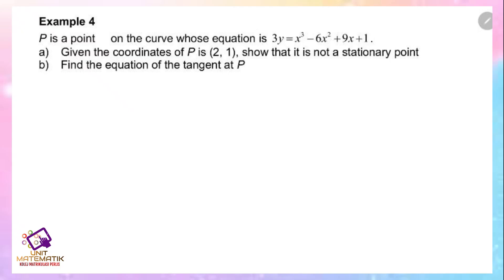Example 4. P is a point on the curve whose equation is 3y equals x cubed minus 6x squared plus 9x plus 1. For part (a), given the coordinate of P is (2, 1), show that it is not a stationary point. For part (b), find the equation of the tangent at P.